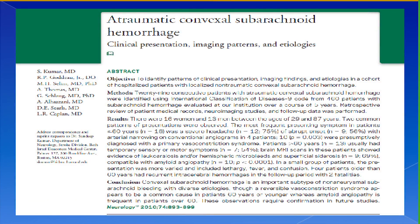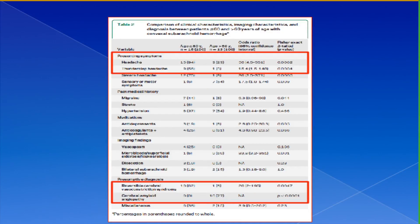One easy way to classify these patients was suggested by dividing them into age less than 60 and age greater than 60 with cortical subarachnoid hemorrhage. In the under-60 age group, by far the most common etiology was reversible vasoconstrictive syndrome at about 60%. In the over-60 group, two-thirds of patients had amyloid angiopathy. Correspondingly, younger patients tended to present with thunderclap headache, and older patients more likely with transient sensory and motor symptoms.